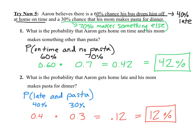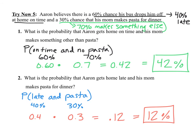Before the calculations, find all the percentages. If there's a 60% chance the bus is on time, there's a 40% chance it's late. If there's a 30% chance mom makes pasta, there's a 70% chance she makes something else. Probability Aaron gets home on time and doesn't get pasta: 0.6 times 0.7 equals 0.42, or 42%. Probability he's late and she makes pasta: 0.4 times 0.3 equals 0.12, or 12%.